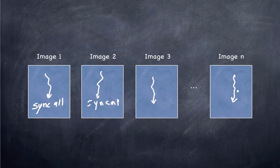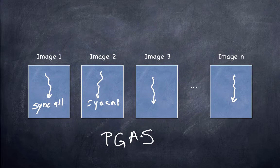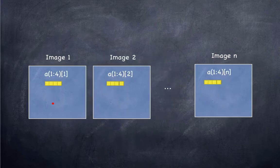And the coarrays define what's referred to as a partitioned global address space. So Fortran falls into the category of PGAS languages. So let's see the way the partitioning works.